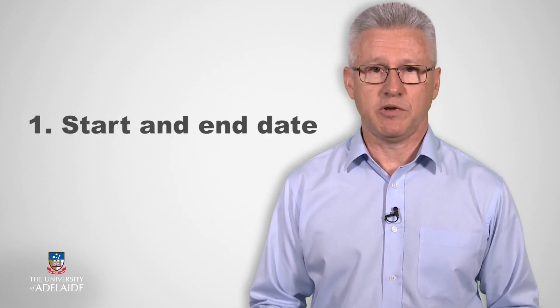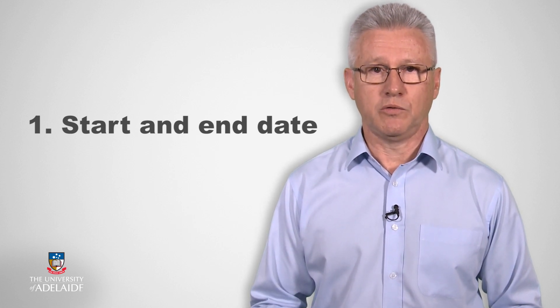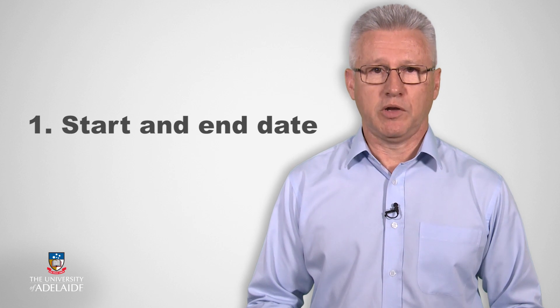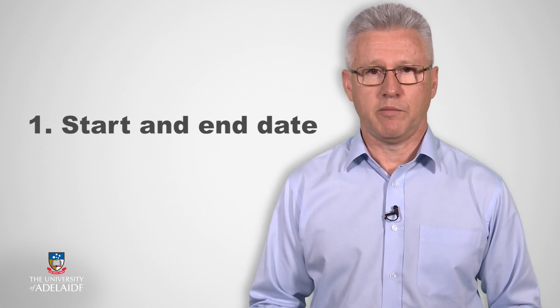Generally, there are four main characteristics of a project, regardless of its size and complexity. The first characteristic is that a project has a definite start and end date. It is a temporary undertaking within a fixed period of time, whether this is one week or six years. A project manager has to complete the project within the specified amount of time.